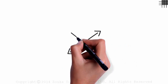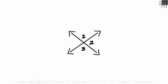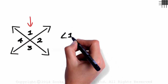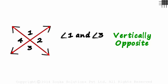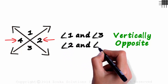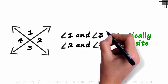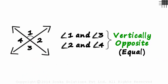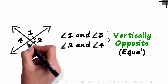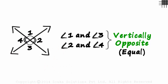Now let's move on to the last type. Four angles are formed when two lines intersect: 1, 2, 3, and 4. In this figure, angle 1 and angle 3 are vertically opposite angles. They are formed when two lines intersect each other — they are opposite each other and have the same vertex. With the same logic, angle 2 and angle 4 are also vertically opposite angles. Vertically opposite angles are always equal. Angle 1 will be equal to angle 3, and angle 2 will be equal to angle 4, no matter how the lines are moved.